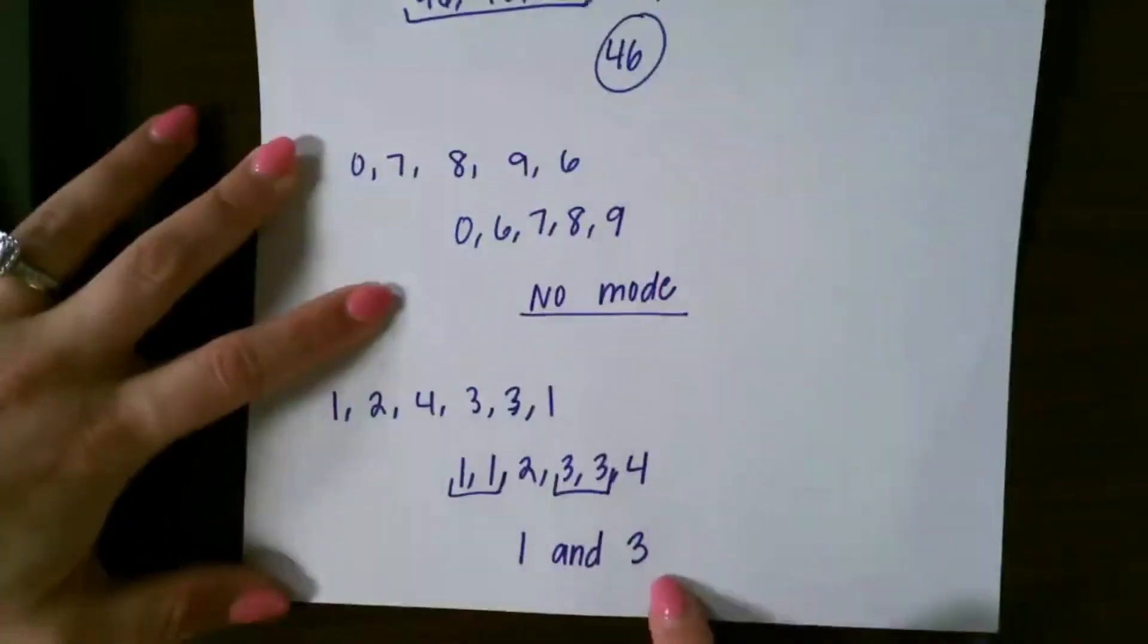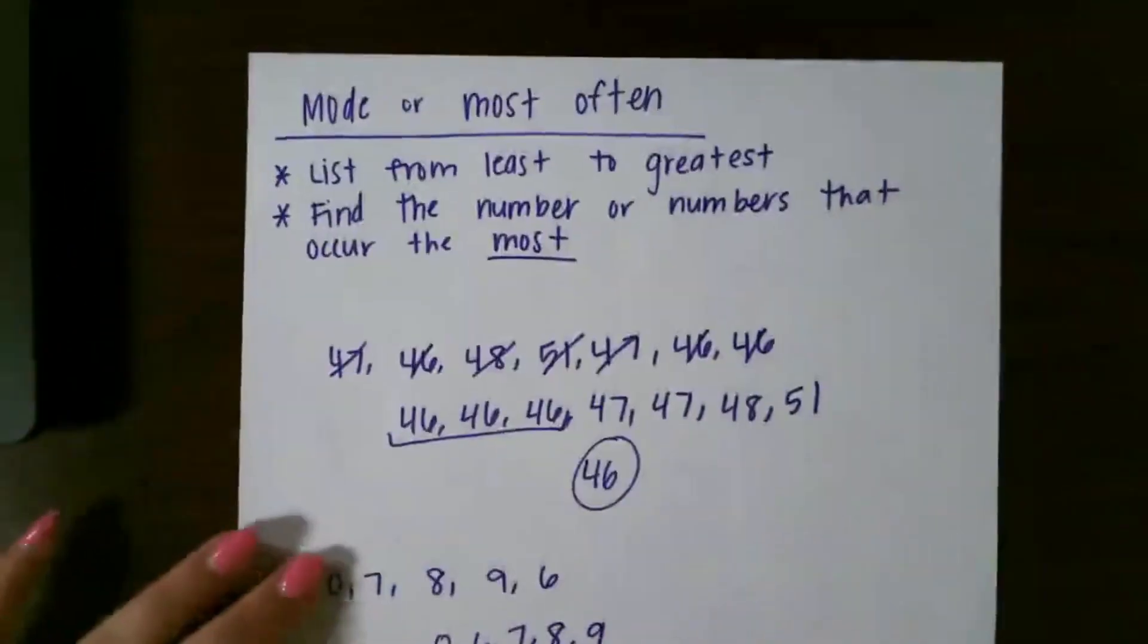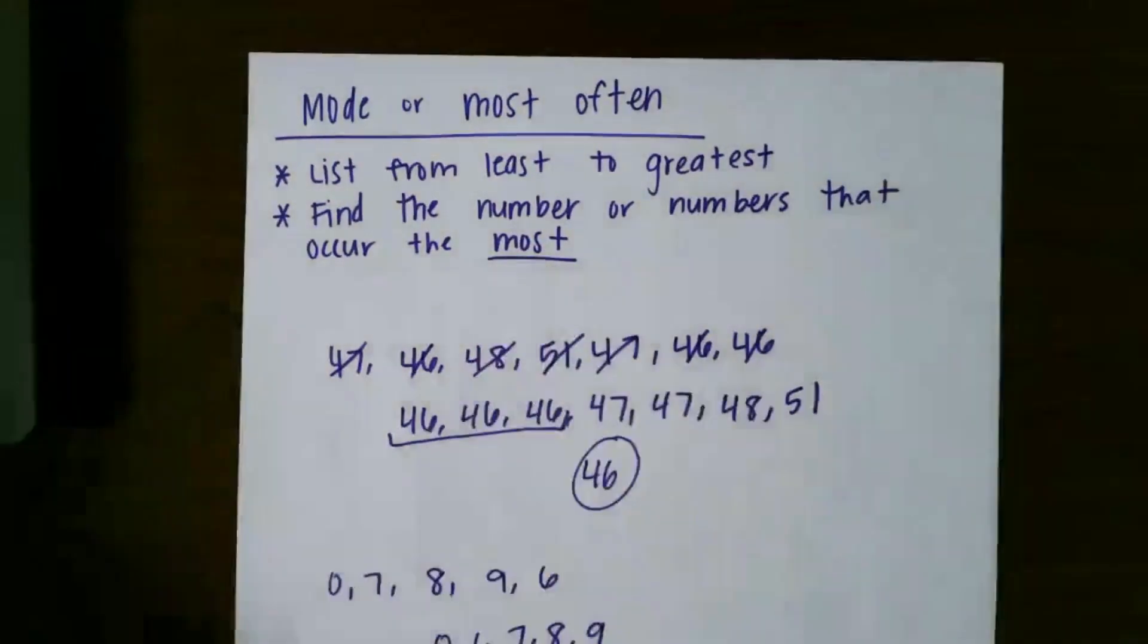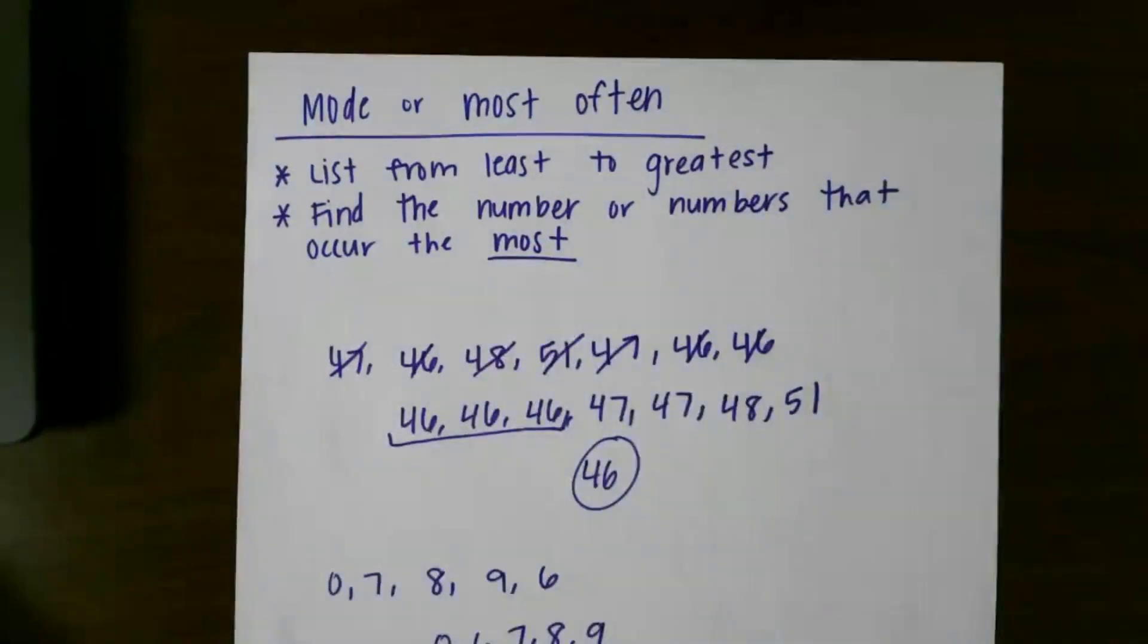So we can have one mode, no mode, or more than one mode. And again, it's your number that shows up the most often in your list, not just more than once.